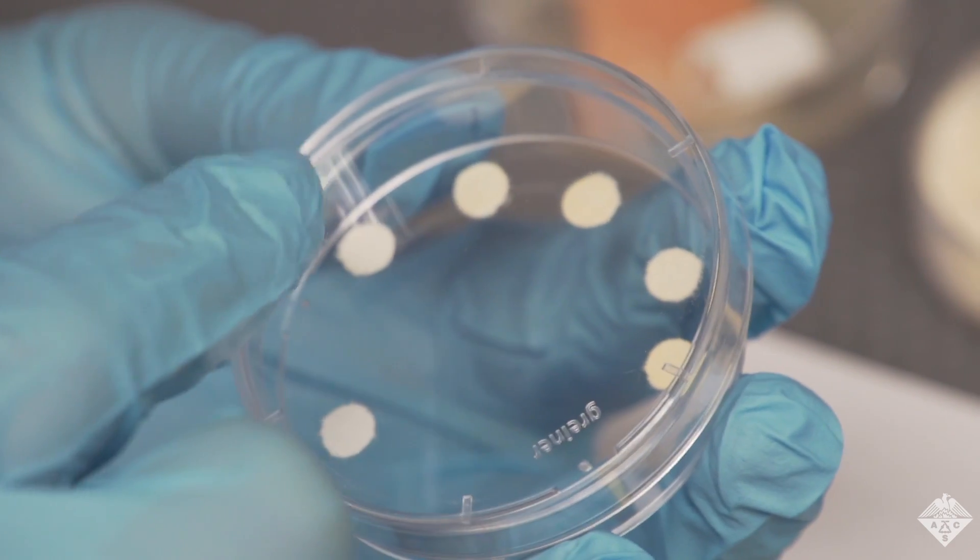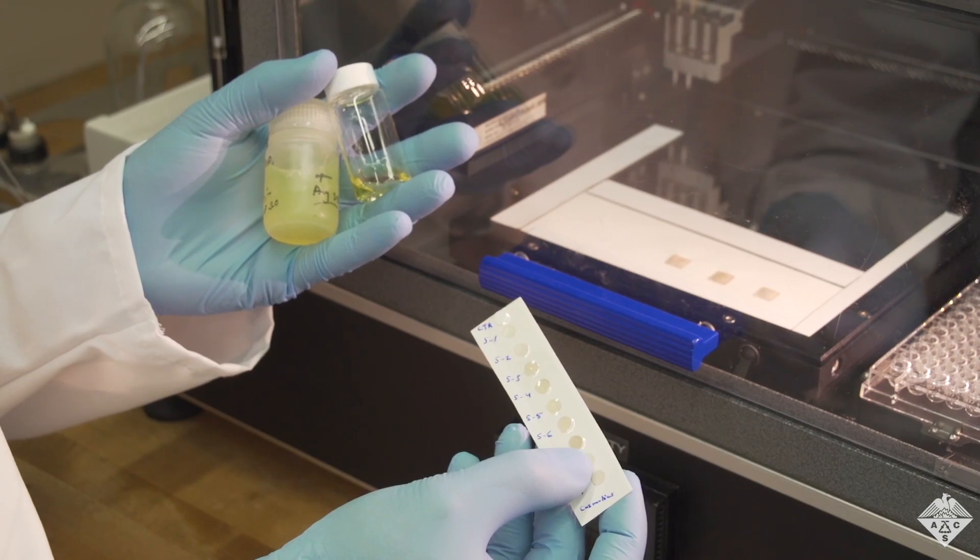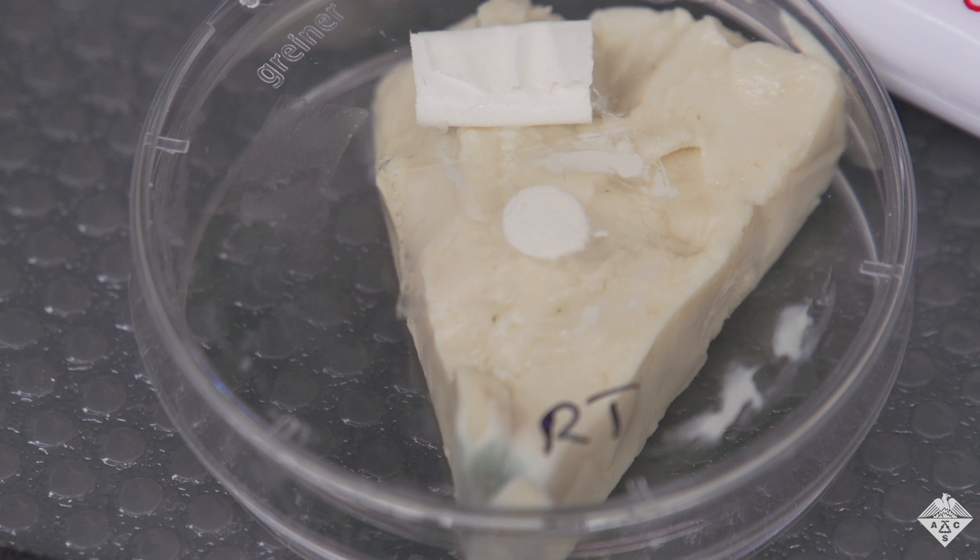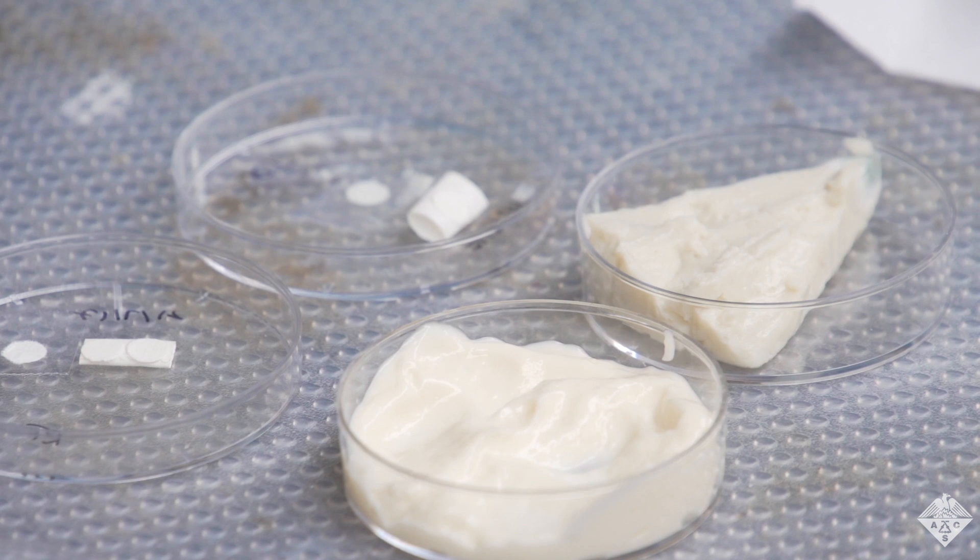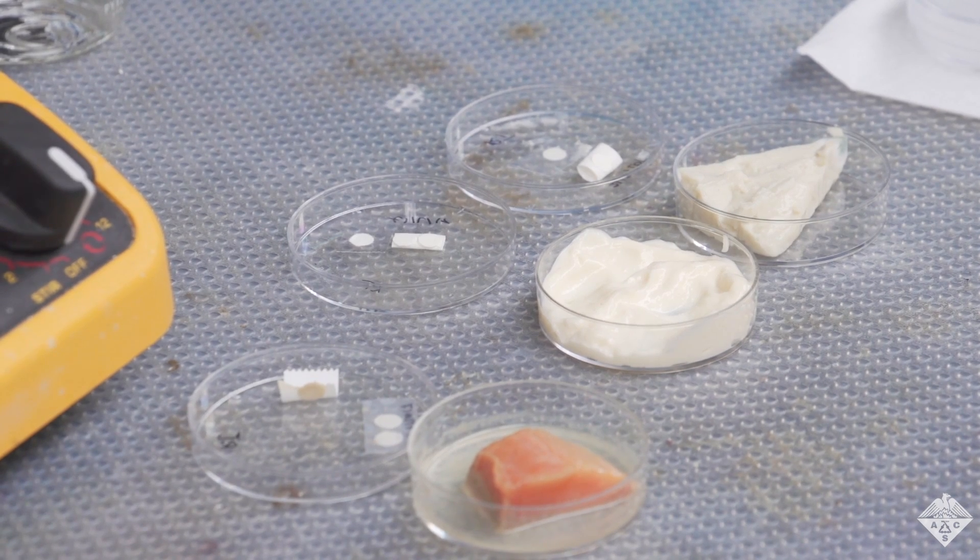The sensors, resembling paper dots, would change color as cosmetics and food go bad. The sensors bind to the reactive oxygen species that products accumulate as they age and eventually spoil. Though testing for this application is still ongoing, this technology could one day be incorporated into smart labels that would tell consumers when to throw a product out.